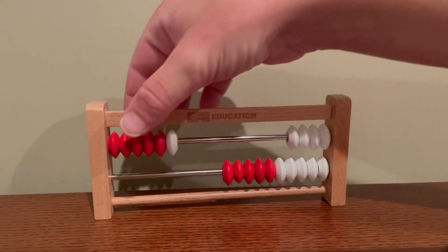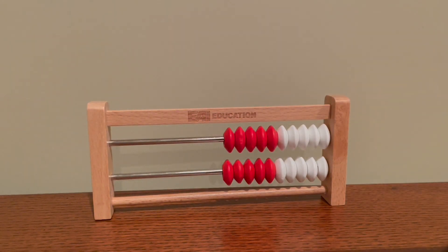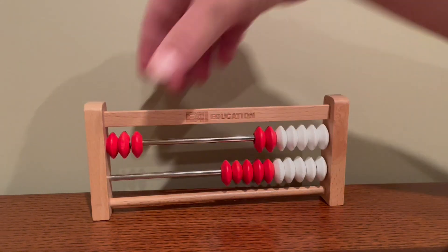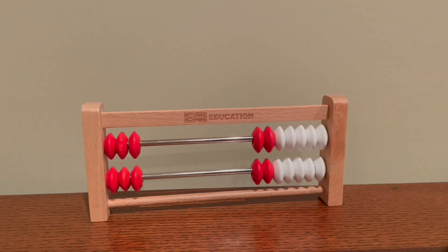Another way that students may choose to show the number six is if they're familiar with the doubles fact, three plus three equals six. If that's the case, they might grab three on the top and three on the bottom, moving them to the left and note that that's six.